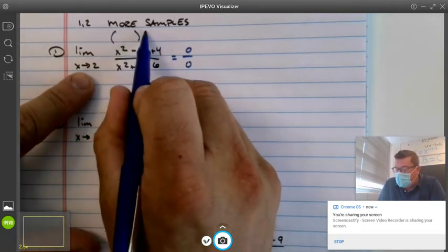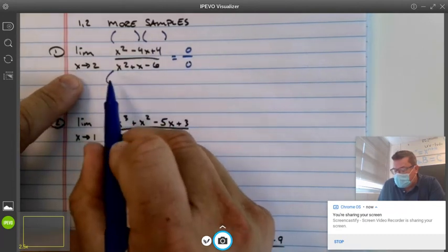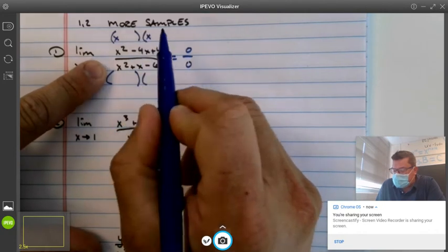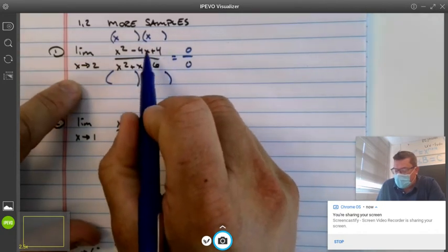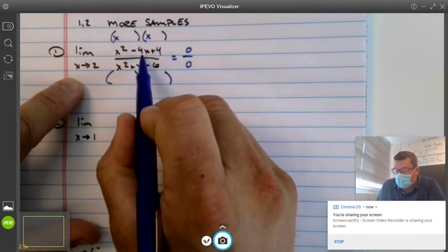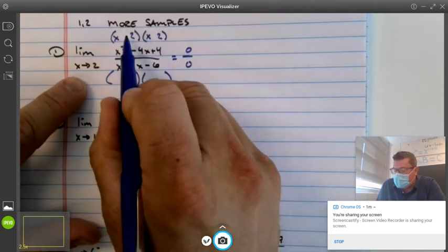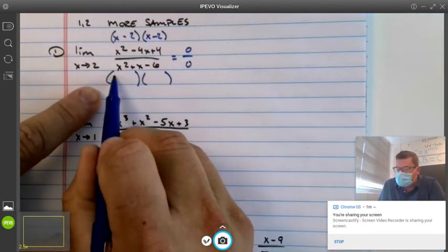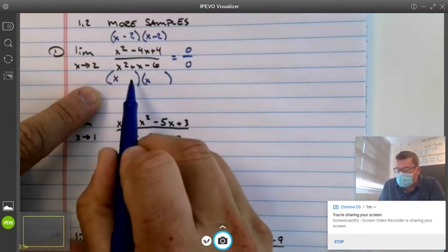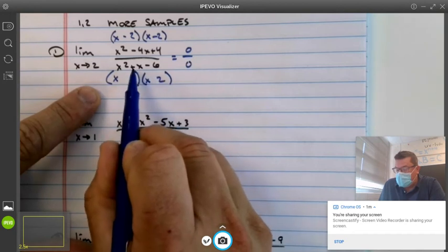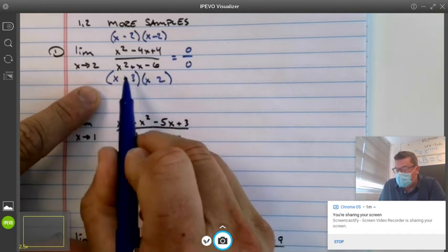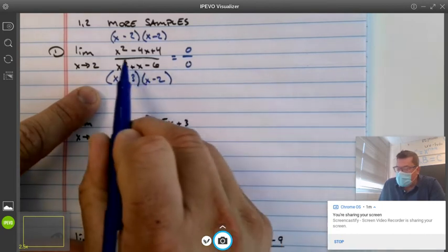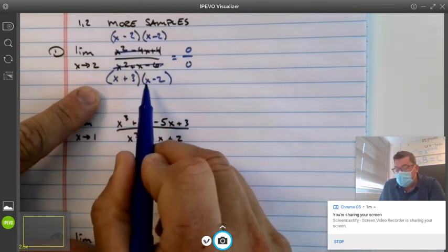We'll see if these guys are factorable. What times what is x squared? x and x. What times what is 4, but added together is negative 4, and they both have to be negative. What times what is x squared? What times what is 6, but added together gives me a positive 1, so I have more positives than I do negatives. Once you've got it in the factored form, then you can cancel.